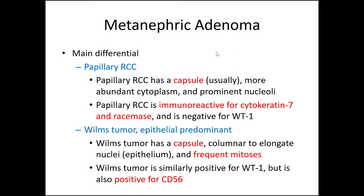Let's talk about the main differential. Papillary renal cell carcinoma typically has a capsule, generally has more abundant cytoplasm so it will not have that blue cell appearance on low magnification, and they generally have prominent nucleoli. Papillary RCC is positive for cytokeratin 7 and racemase, and negative for WT1. A Wilms tumor that is epithelial predominant would also be in the differential, mainly if you're dealing with a childhood-age tumor — in an adult, Wilms tumor is much less likely. Wilms tumor also has a capsule and is a high-grade malignancy with frequent mitoses, necrosis, and other features pointing towards malignancy. Wilms tumor is similarly positive for WT1 and also positive for CD56, which is negative in metanephric adenoma.